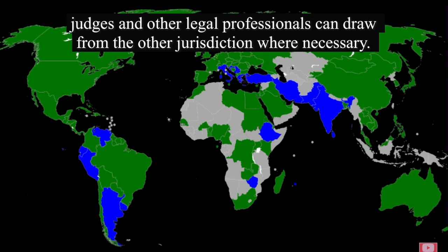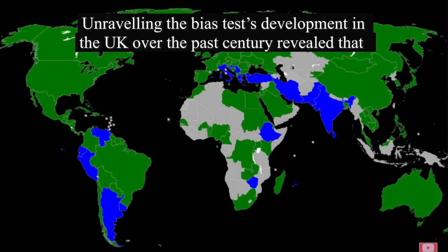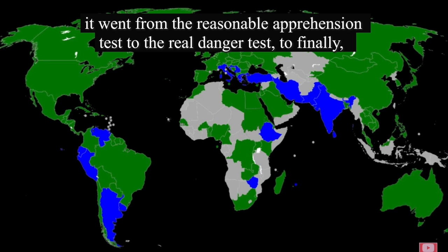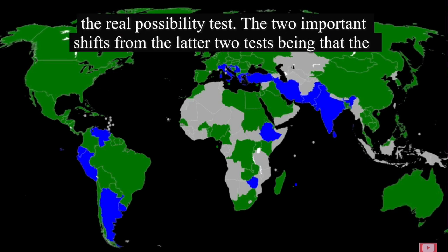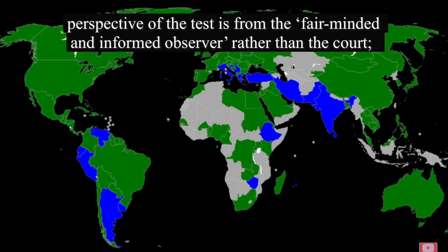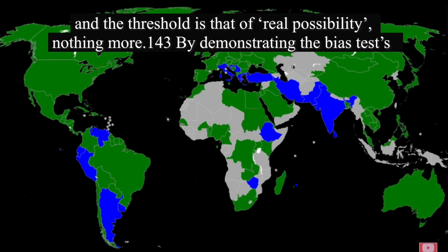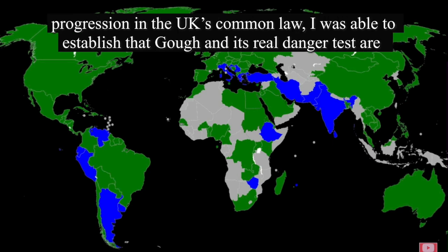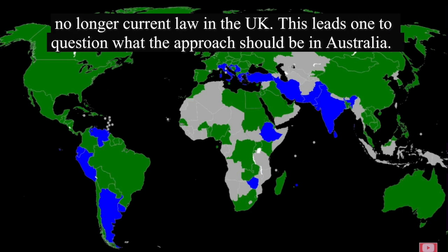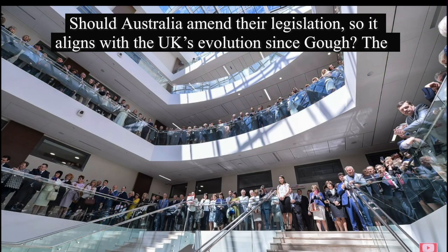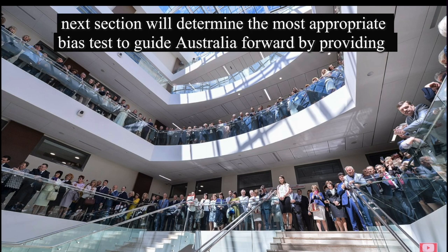The real danger test is not the current bias test in the UK. Australia and the UK have a symbiotic relationship with one another, each borrowing from each other's case law to help develop their own. This was evident in Medicaments and Porter v Magill and their reference to Australia's High Court decision in Webb, which was particularly influential in their amendment of the bias test. Unraveling the bias test's development in the UK over the past century revealed that it went from the reasonable apprehension test, to the real danger test, to finally the real possibility test. The two important shifts from the latter two tests being that the perspective of the test is from a fair-minded and informed observer rather than a court, and the threshold is that of real possibility — nothing more. By demonstrating the bias test's progression in the UK's common law, it was established that Gough and its real danger test are no longer current law in the UK.